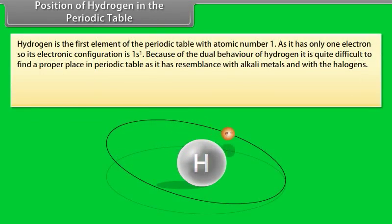Position of hydrogen in the periodic table. Hydrogen is the first element of the periodic table with atomic number 1. As it has only one electron, so its electronic configuration is 1s1. Because of the dual behavior of hydrogen, it is quite difficult to find a proper place in periodic table.